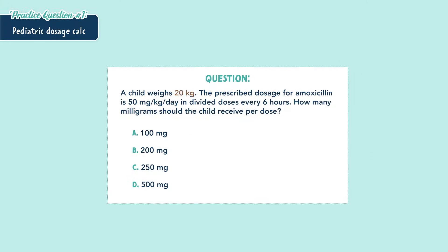A child weighs 20 kilograms. The prescribed dosage for amoxicillin is 50 milligrams per kilogram per day in divided doses every six hours. How many milligrams should the child receive per dose? So the prescription is 50 milligrams per kilogram per day.